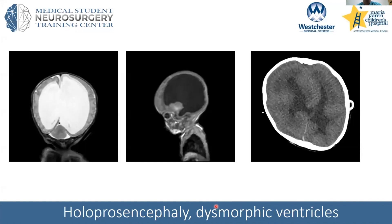Just to show that not all ventricles are normal: this is a patient with holoprosencephaly, where some of the midline structures do not fuse and there's really just one large ventricle. This is on a continuum. And here's an example of some dysmorphic ventricles that look very abnormal — you can tell this patient has a shunt; you can see the valve here on the side.